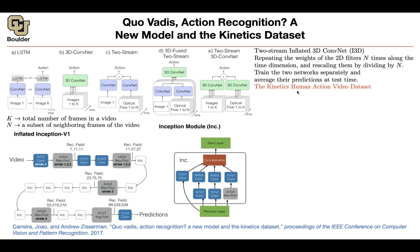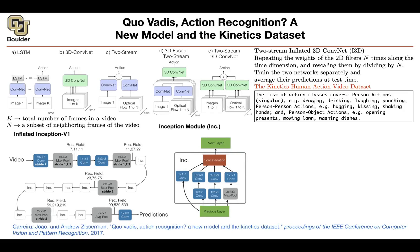There is a dataset introduced by these authors in another paper — it's much bigger than previous video benchmarks. It's a list of action classes: person actions like drawing, drinking, laughing, punching; person-person actions like hugging, kissing, shaking hands; and human-object interactions like opening a present, mowing the lawn, washing the dishes.